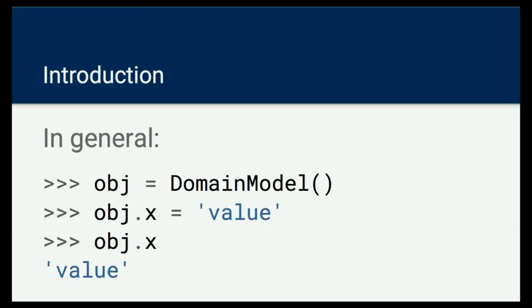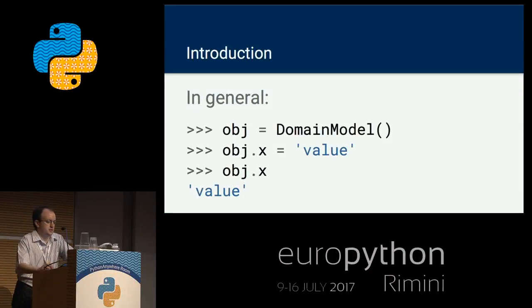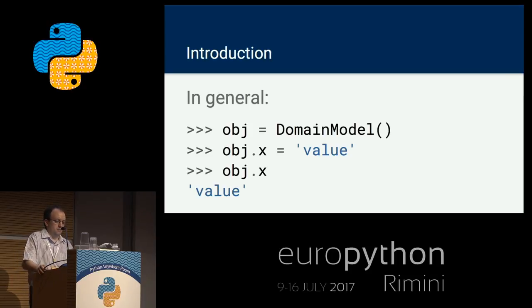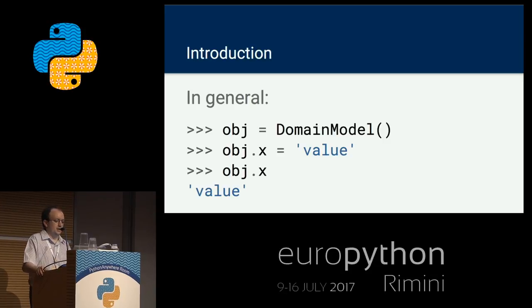Let's start with the basics — something that applies to all mainstream programming languages that have support for object orientation. We have objects in the form of instances of some class, and in there we hold data based on attributes. We can set values to them, and when we request the value, we obtain what we expect.